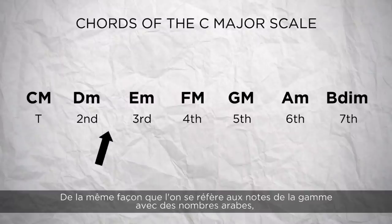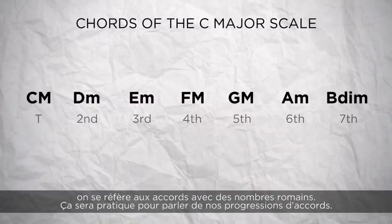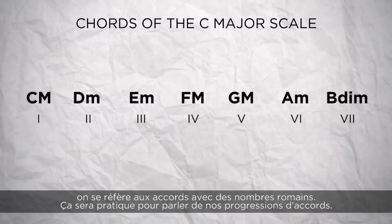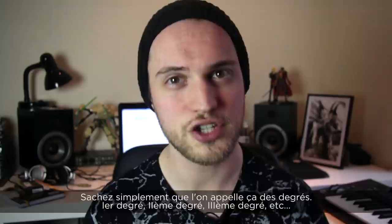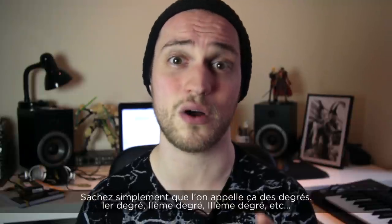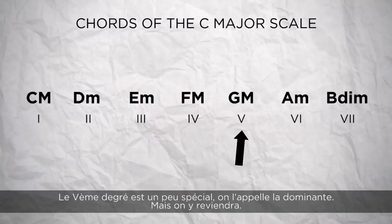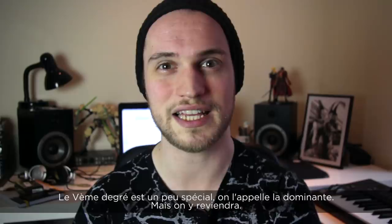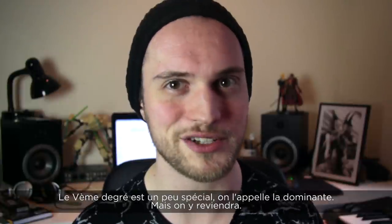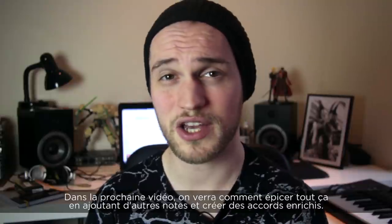Just as we refer to every note in the scale with Arabic numerals, we refer to the chords of a scale with Roman numerals — that comes in handy when talking about chord progressions. These are called degrees: 1st degree, 2nd degree, 3rd degree, and so on. The 5th degree is a bit special — it's called the dominant — but we'll get back to it.